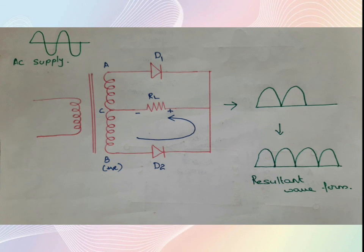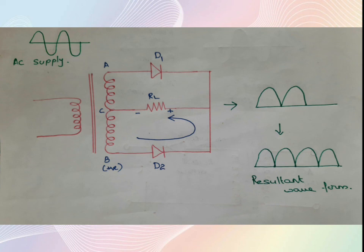During the negative half cycle, point B is positive with respect to C, so diode d2 conducts electric current and we also get the resultant waveform. During the positive half cycle d1 conducted; during the negative half cycle d2 conducts. So both the positive and negative half cycles of the alternating current are converted into direct current, giving us an uninterrupted resultant output waveform. This is full wave rectification.